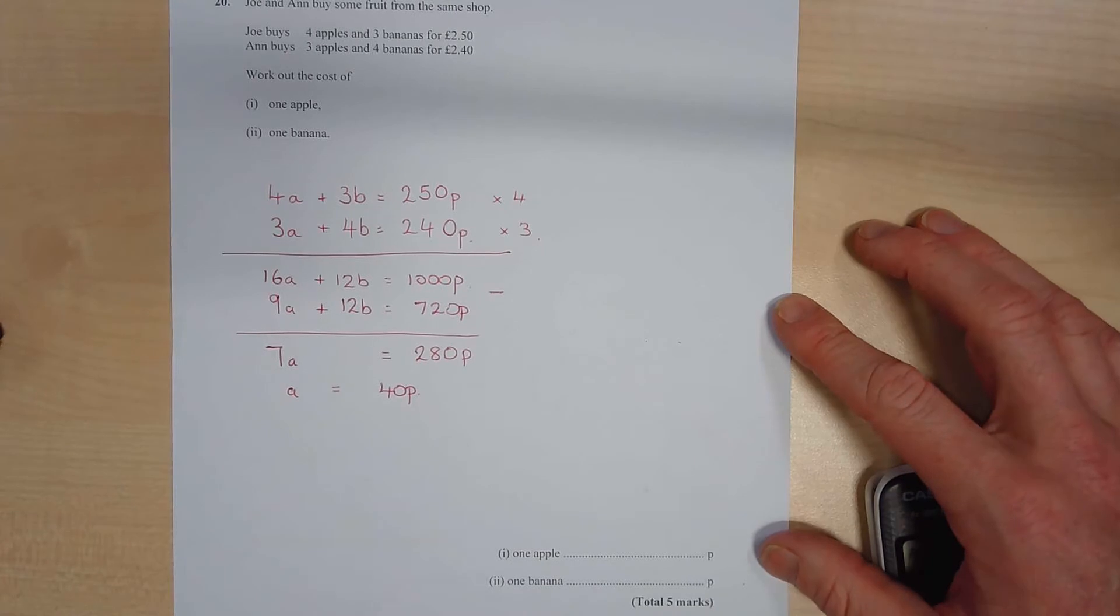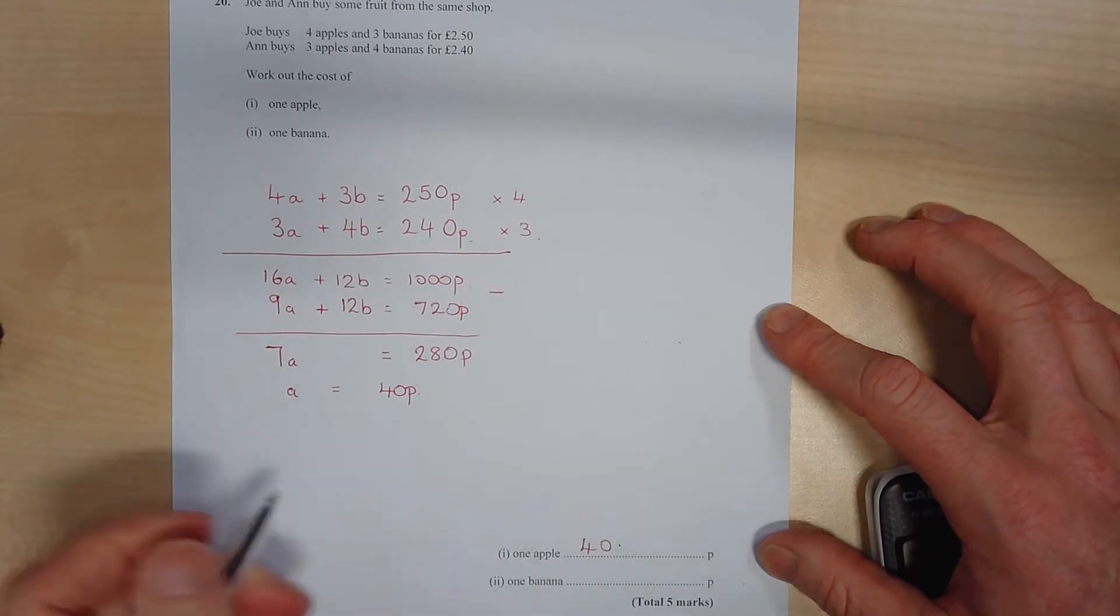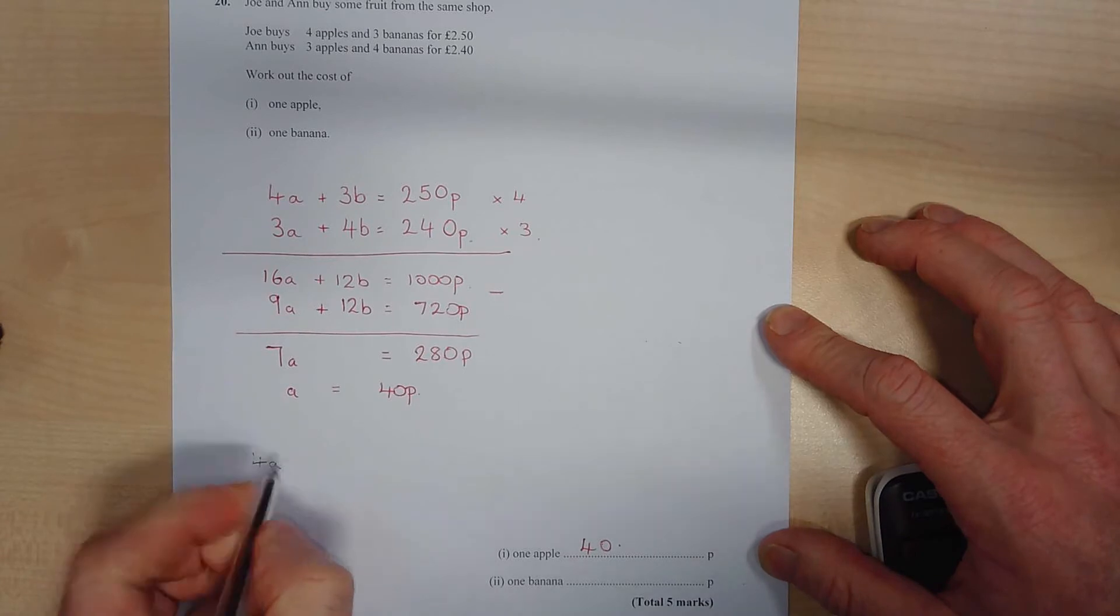So one apple, divide that by 7, must have been 40p. So we know that down here we can now put in one apple equals 40p. Okay, now let's have a look at the banana.